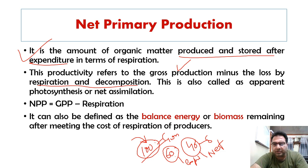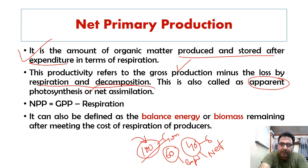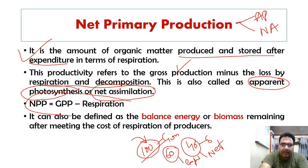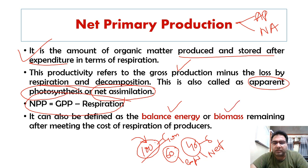Net primary production is also called apparent photosynthesis or net assimilation. The formula is: NPP = GPP (gross primary production) minus respiration. It can also be defined as the balance energy or biomass which remains after meeting the cost of respiration of the producers — the net stored energy in the green plants, that is the net accumulation of biomass which serves as food for herbivores.